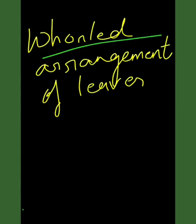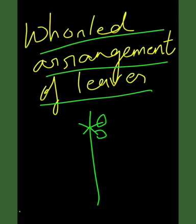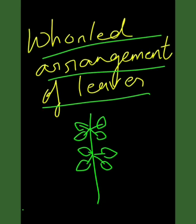Next is whorled arrangement of leaves. Here, more than two leaves are present at each node of the stem. They do not overlap and form a circle-like pattern. Such a pattern is seen in the leaves of lilium.